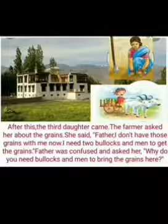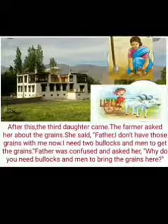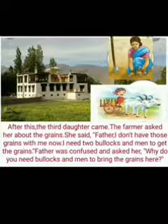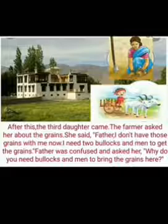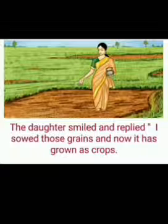Now we move on to the third daughter's response. The farmer asked her about the grains. She said, 'Father, I don't have those grains with me now. I need two bullocks and men to get the grains.' The father was confused and asked her why she needed bullocks and men to bring the grains. See, the father gave only a bag of grains to all three daughters, but now the third daughter needs a bullock cart — a man riding a bullock cart, as you can see in the picture. Then the daughter smiled and replied.